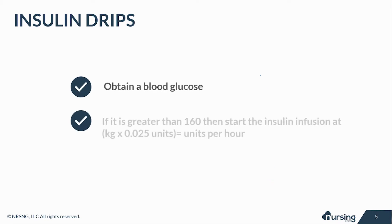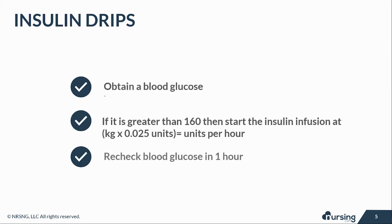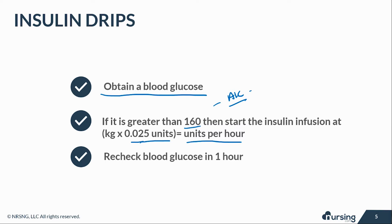When you start the drip, the first thing you need to do is obtain a blood glucose — you need a baseline. If you can look at the patient's A1c, that's even better, because you'll know their glucose has been elevated. If not, get a blood glucose and know the levels for the last few hours so you know what you're dealing with. At my facility, if the blood glucose is greater than 160, you start the insulin infusion at 0.025 units per kilogram per hour.